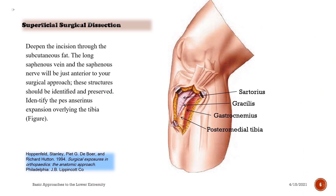Superficial Surgical Dissection: Deepen the incision through the subcutaneous fat. The long saphenous vein and the saphenous nerve will be just anterior to your surgical approach; these structures should be identified and preserved. Identify the pes anserinus expansion overlying the tibia.